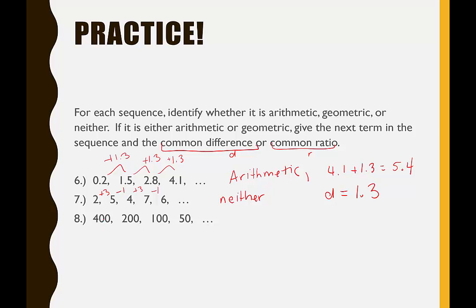But instead, to get from 400 to 200, I would divide by two. To get from 200 to 100, I would divide by two. And I could divide by two. This indicates to me that it is a special sequence. This is geometric.